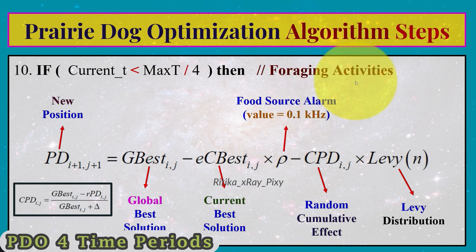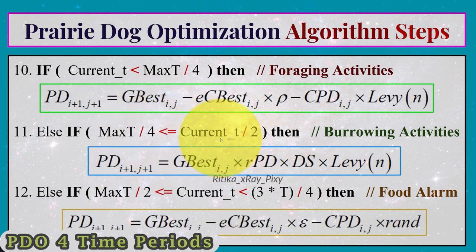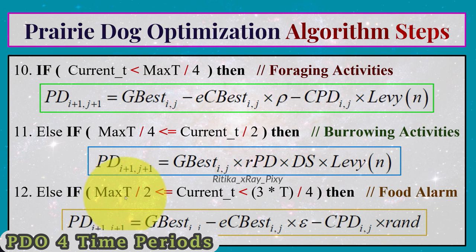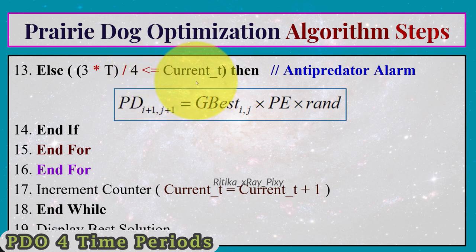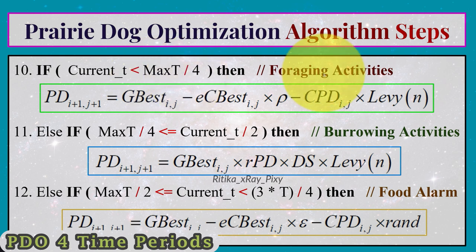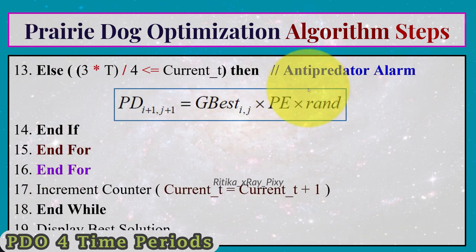The algorithm uses four conditional time periods. If current iteration < max_iteration/4, perform foraging activities. Else if max_iteration/4 ≤ current iteration < max_iteration/2, perform burrow-making activities. Else if max_iteration/2 ≤ current iteration < 3×max_iteration/4, perform food alarm. Else if 3×max_iteration/4 ≤ current iteration, perform anti-predator alarm. These conditions ensure the algorithm transitions through all four behavioral phases.